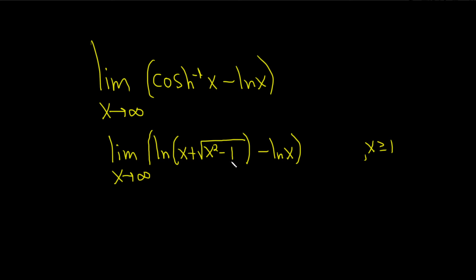So now what we can do is use some properties of logs. Recall, if you have the natural log of a minus the natural log of b, this is the natural log of a over b. That's called the quotient rule for logs.